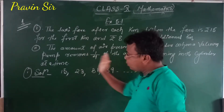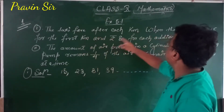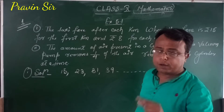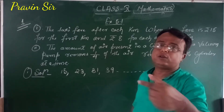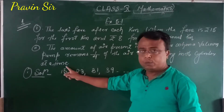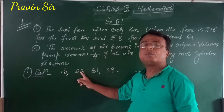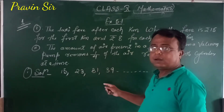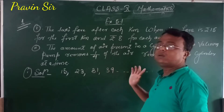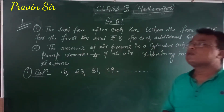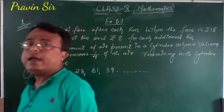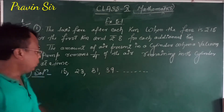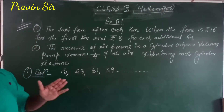I hope you understood how I converted the word problem into a series. For the first kilometer, the taxi fare is rupees 15. For each next kilometer we add 8 rupees more. So first term A1 is 15, A2 is 23, A3 is 31, A4 is 39. Now we will find out the common difference.